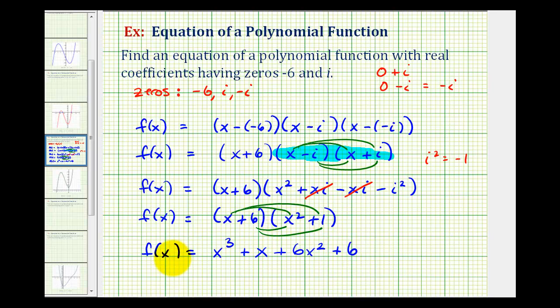This would be a polynomial function that has the given zeros. Let's go ahead and write these terms in descending order. So we'd have x cubed, plus six x squared, plus x, plus six.